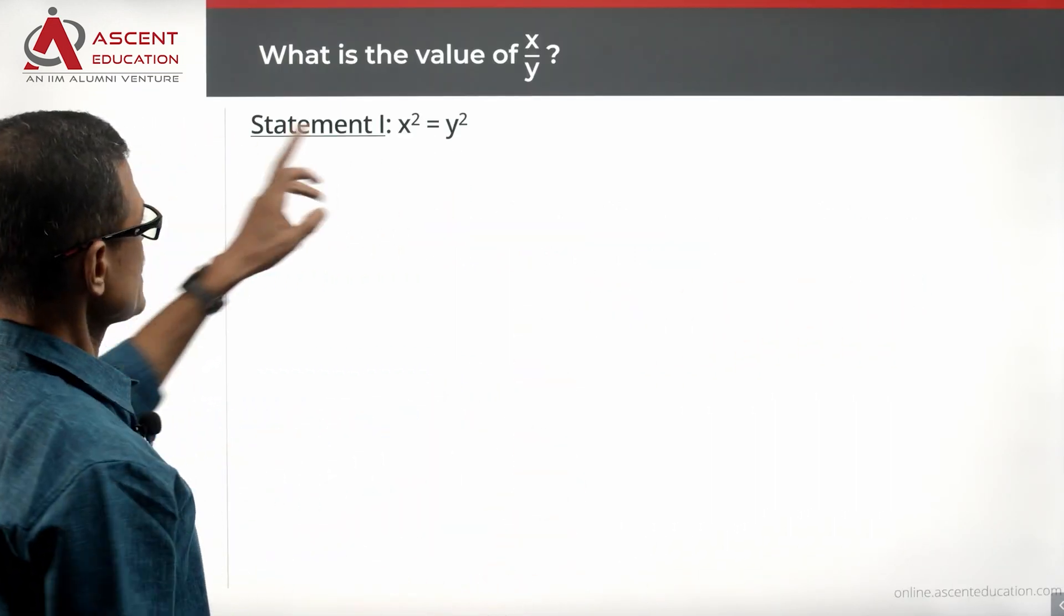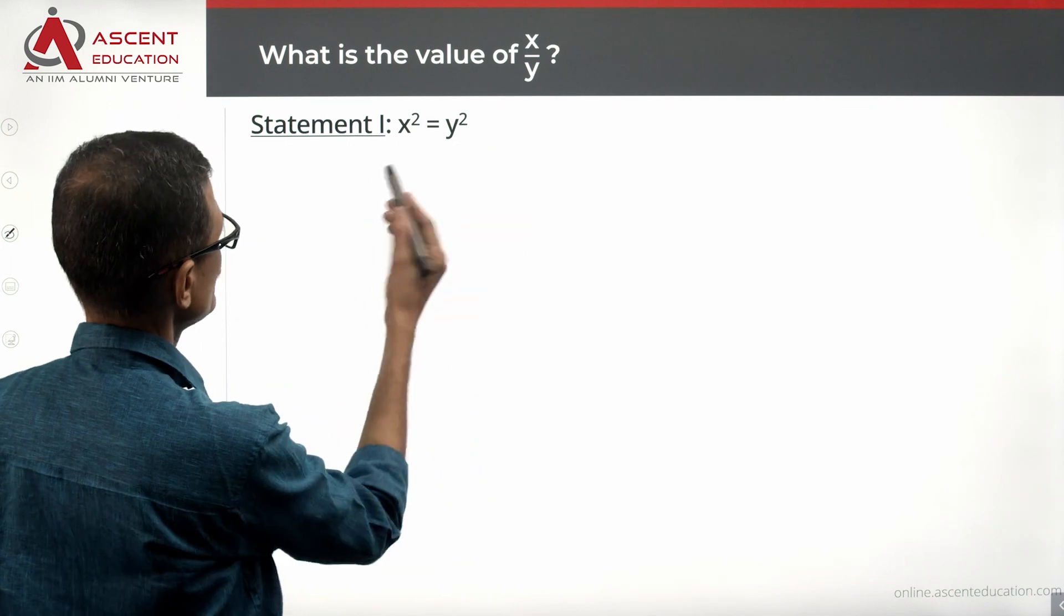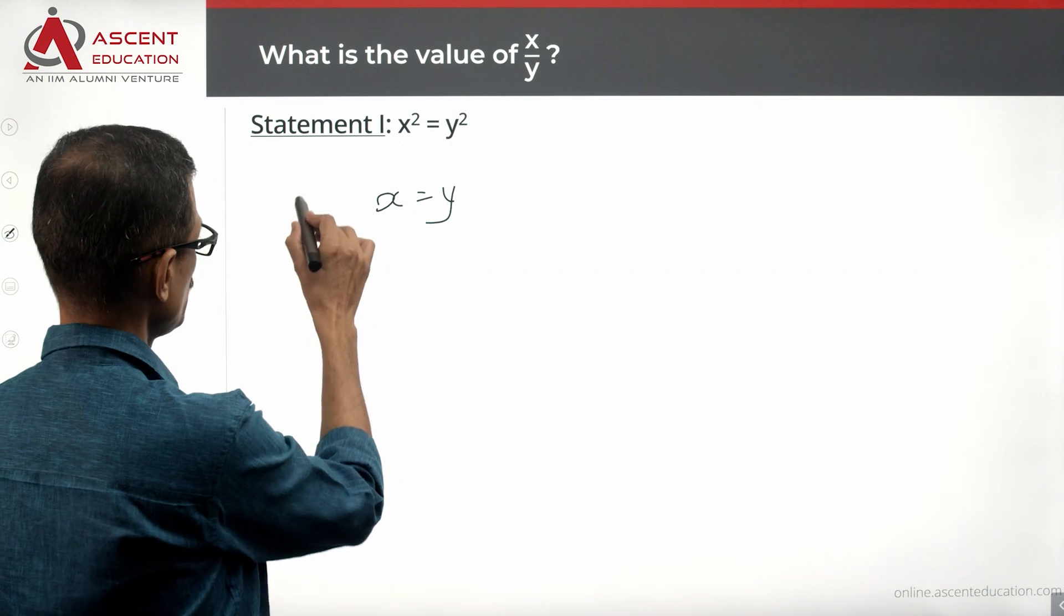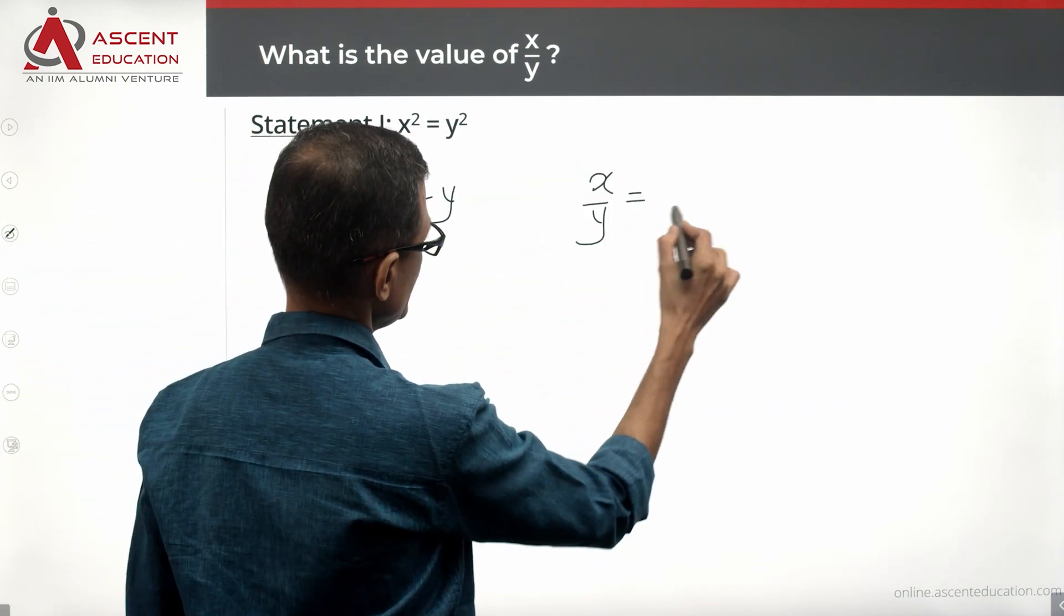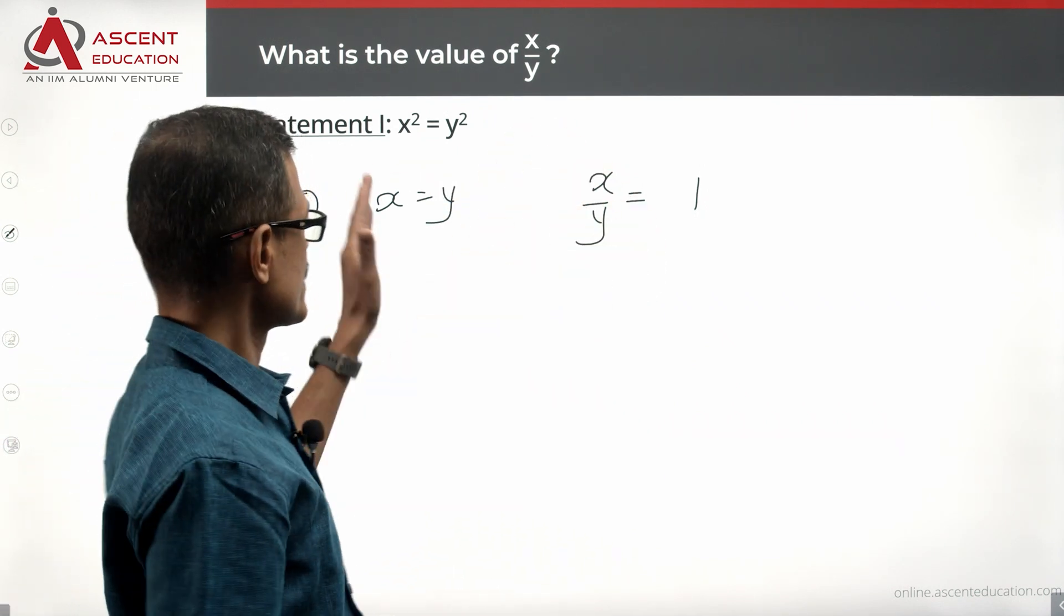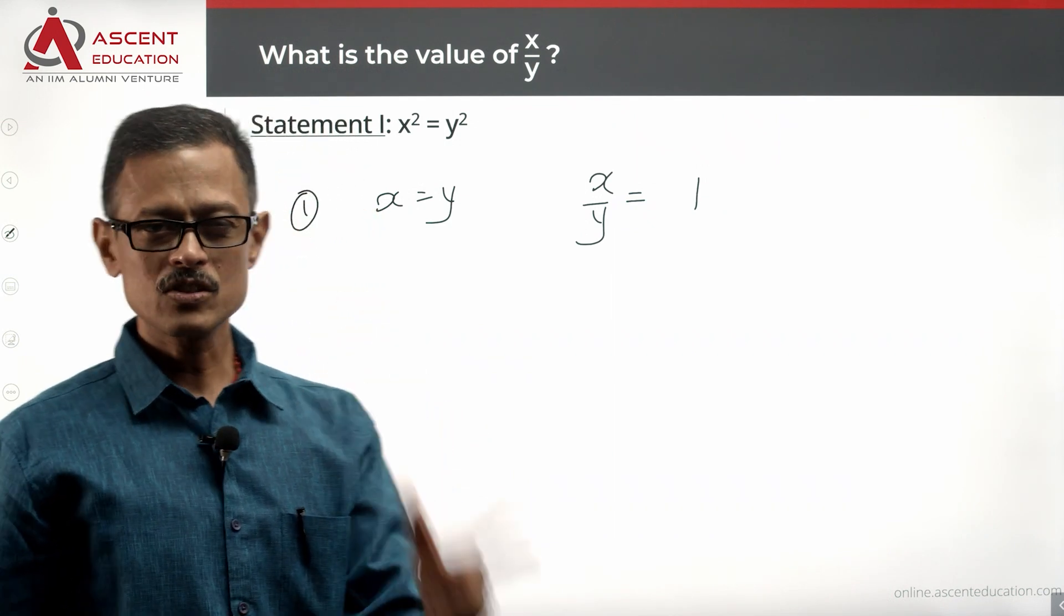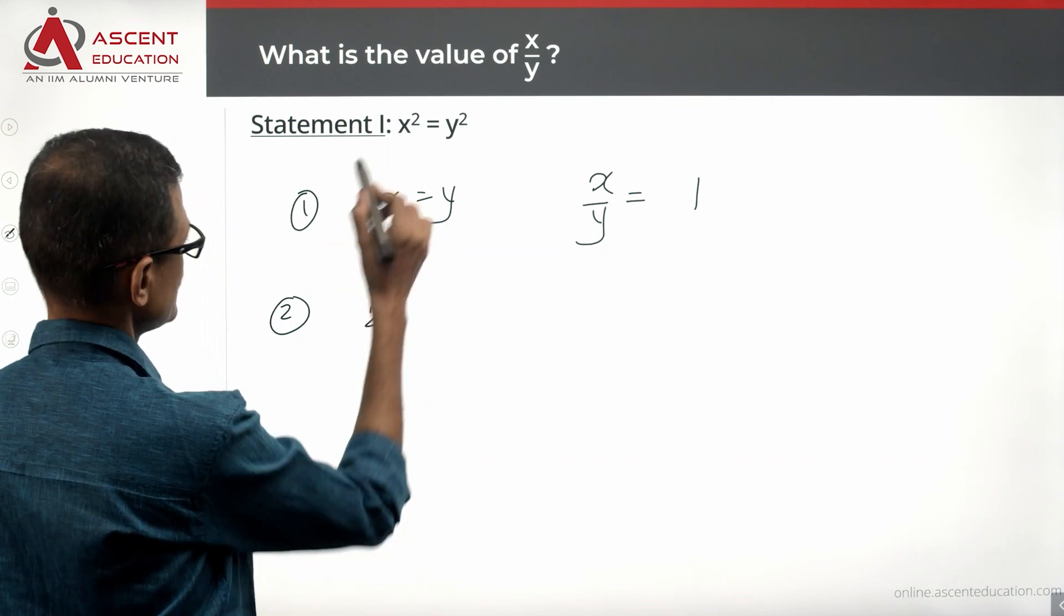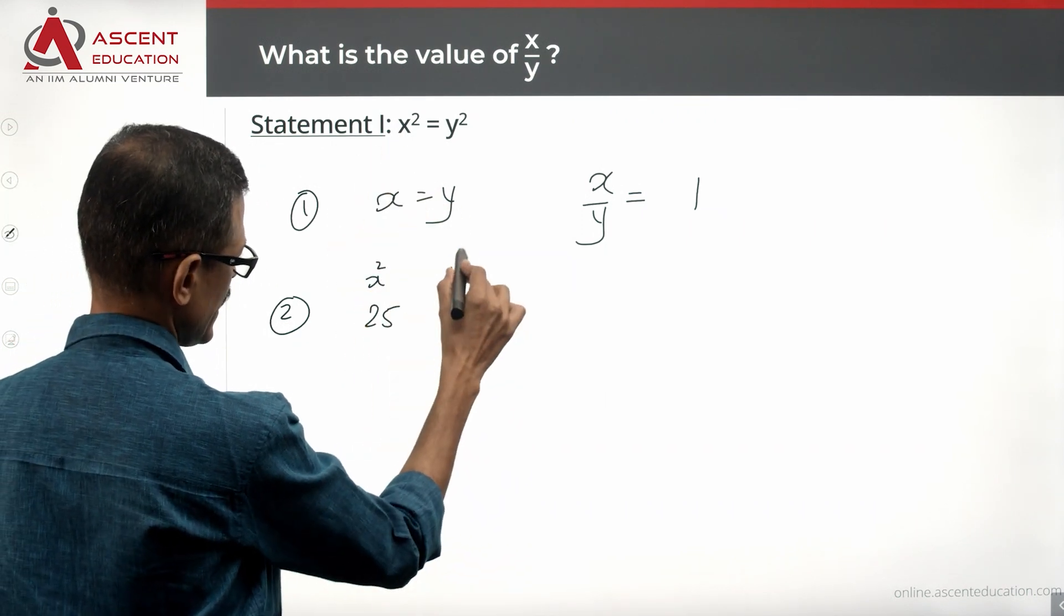Statement one alone: x² = y². If x² = y², first possibility is x is equal to y, which is definitely one possibility. In that case, x by y value will be equal to 1 because x equals y, so x by y equals 5 by 5, which equals 1. But there is also another possibility. Think about it this way: for example, x² is 25, y² is 25. x value could be the square root of 25, so x equals 5.